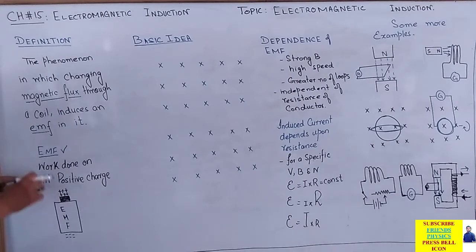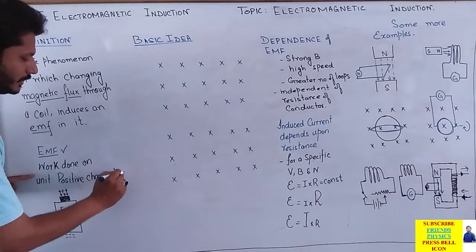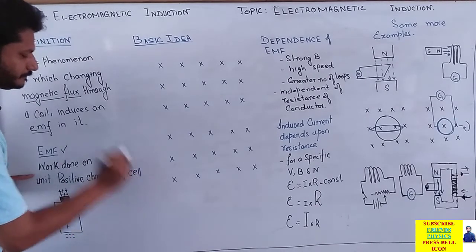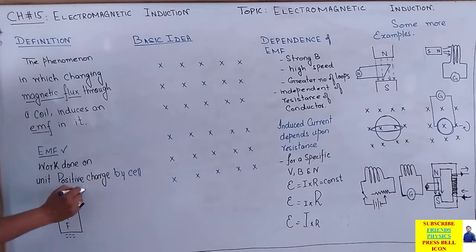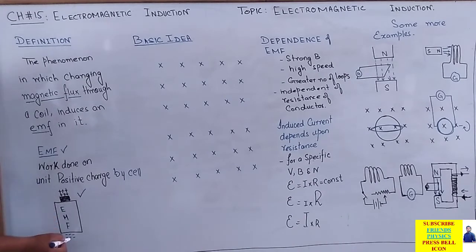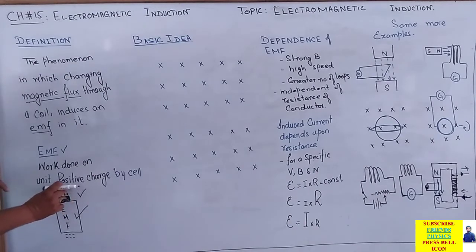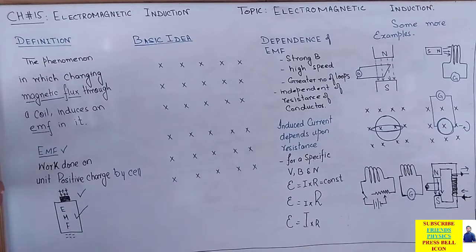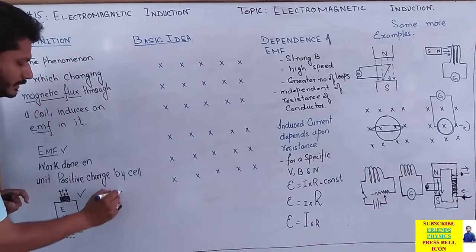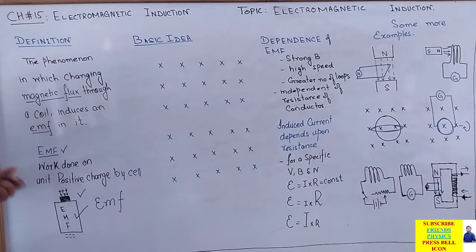اب سب سے پہلے EMF پر آتے ہیں — electromotive force۔ اس کی definition: work done on unit positive charge by the battery or by the cell. Cell کی construction دیکھیں: ایک side positive ہے اور ایک side negative ہے — جس کی وجہ سے permanently اس battery کے اندر EMF exist کرتا ہے۔ It means اگر آپ کو کسی بھی جگہ ایک side higher potential پر نظر آئے اور ایک side lower potential پر، تو آپ کہہ سکتے ہیں کہ اس جگہ EMF exist کرتا ہے۔